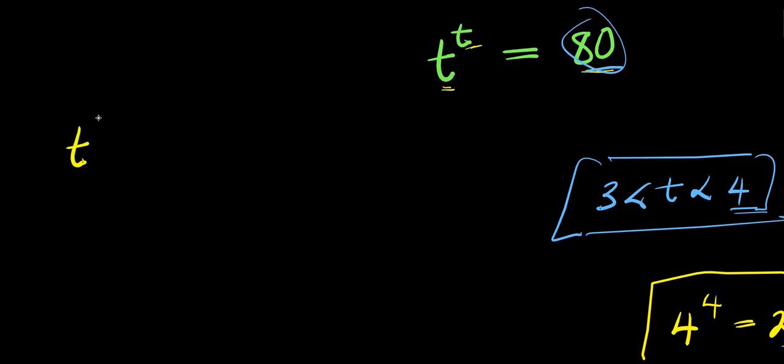So we have t to the power of t equals 80. You can also test — now that you know the range of values, you can consider 3.1 as a value of t, then 3.1 raised to the power of 3.1 will give you 80. If that doesn't satisfy the equation, you proceed to 3.2. You continue like that, but that might actually take time, and that is not the right way of solving this exponential problem.